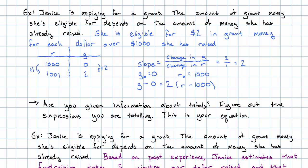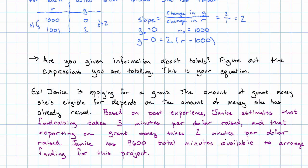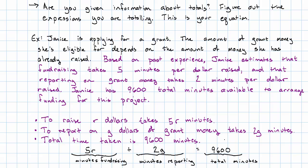In this story, we're told that she spends 5R minutes fundraising, 2G minutes reporting, and her total minutes are 9,600. Alright, so if we're told information about a total, our equation is going to represent adding together the two things we want to total and getting the total as a result. These are the two ways that we're going to be given information to set up an equation in this course. Either information about values of the variable and how the values change, which will let us create a table, or information about the values of the variables and their totals, which will let us create this sort of equation.